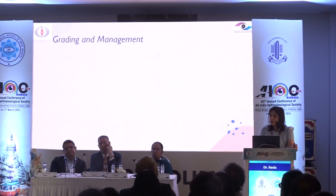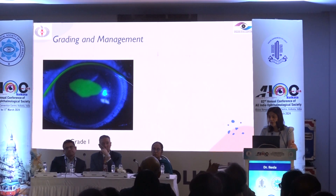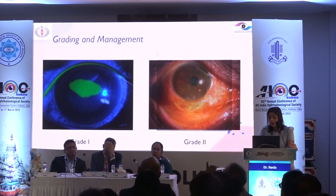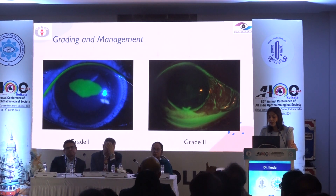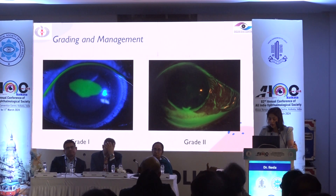Looking at a few cases — this is a grade one chemical burn with no involvement of the limbus and no staining taken up at the limbus. This is a grade two burn. Staining helps us assess the extent of the epithelial defect on both the conjunctiva and cornea. These grades can usually be managed with medical management alone.